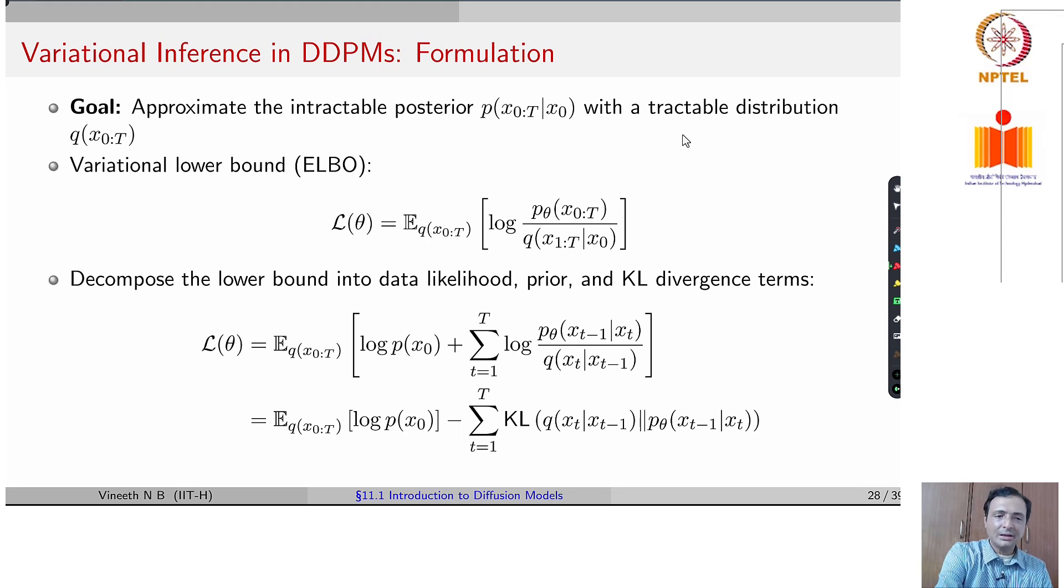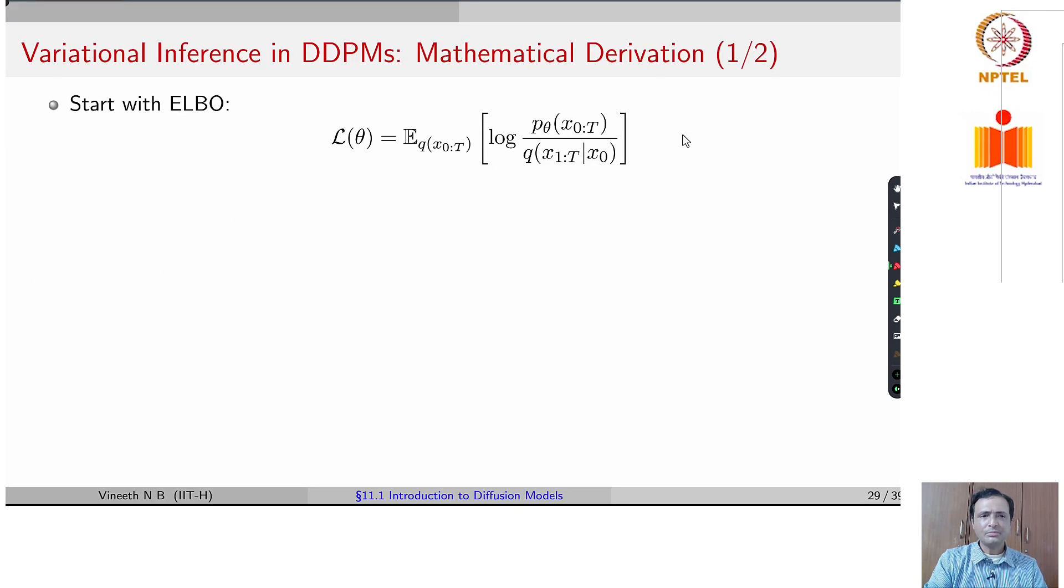And this lower bound can be broken down into a data likelihood, a prior and a KL divergence term, which is typically used as the loss function for training your model.